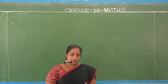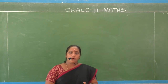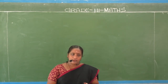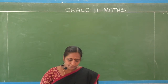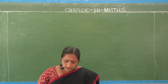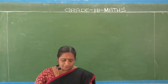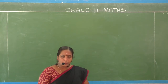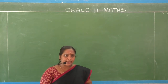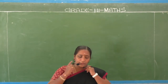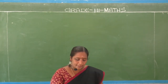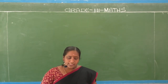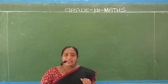In our previous class, we completed up to four chapters: two is addition, three Roman numerals, fourth chapter also addition. Today we are going to see the fifth chapter — subtraction.